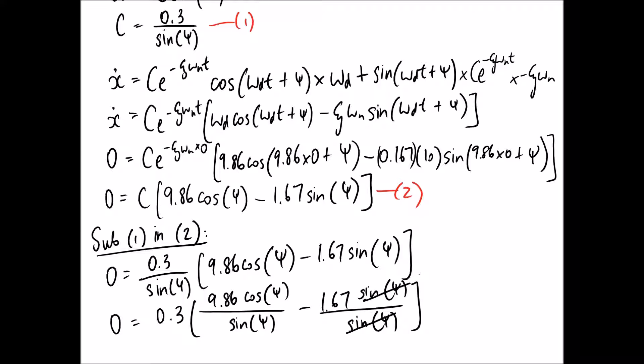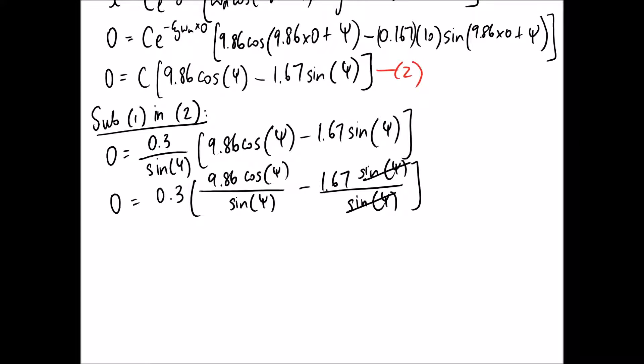Okay, so these cancel out with each other. If I want, I can do 0 divided by 0.3, so that's going to cancel out as well. And all that I'm going to be left with is if I move this to the other side, I get 1.67 is equal to 9.86. And remember, sine over cos is tan. So solving for psi...